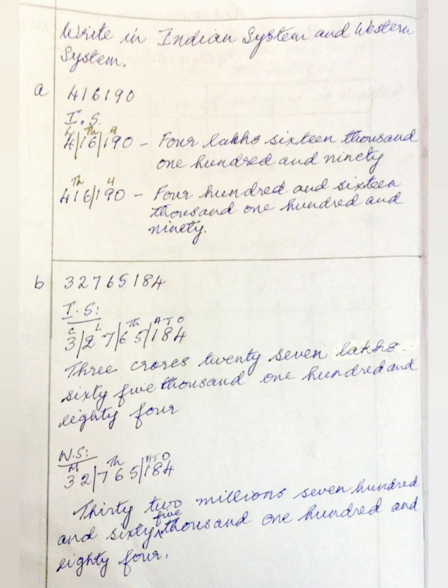The second sum is 32765184. In the Indian system, we mark it as: ones, tens, hundreds, thousands, ten thousands, lakhs, ten lakhs, crores. So you will write it as 3 crores, 27 lakhs, 65184. That is the Indian system.